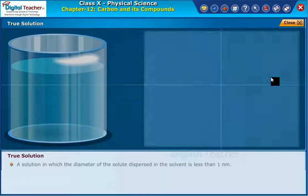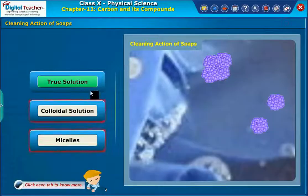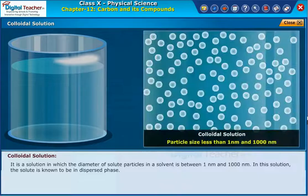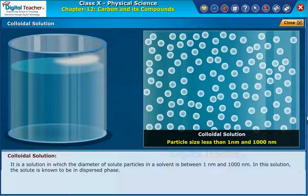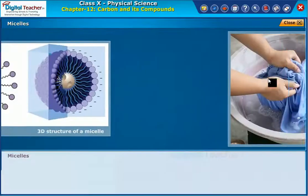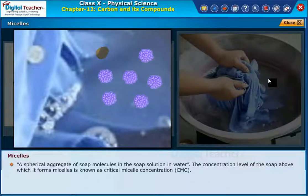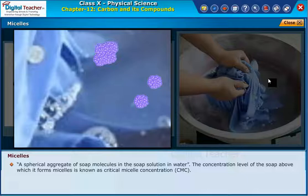True solution: a solution in which the diameter of the solute dispersed in the solvent is less than 1 nm. Colloidal solution: a solution in which the diameter of solute particles in a solvent is between 1 nm and 1000 nm. In this solution, the solute is known to be in the dispersed phase. Micelles: a spherical aggregate of soap molecules in the soap solution in water. The concentration level of soap above which it forms micelles is known as critical micellar concentration, CMC.